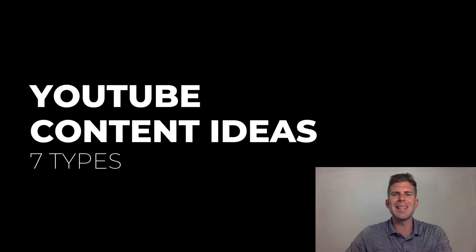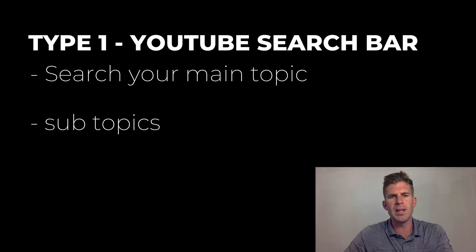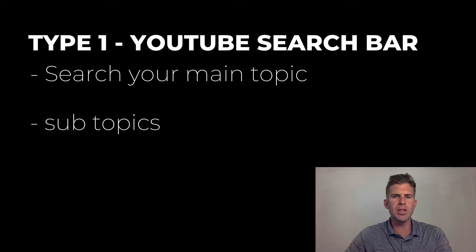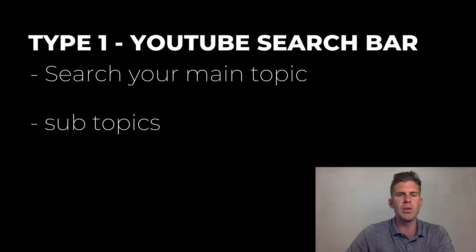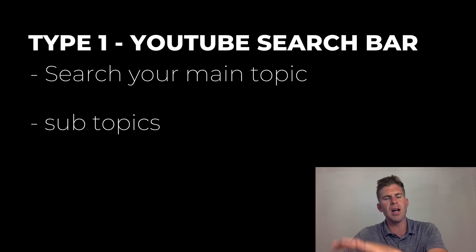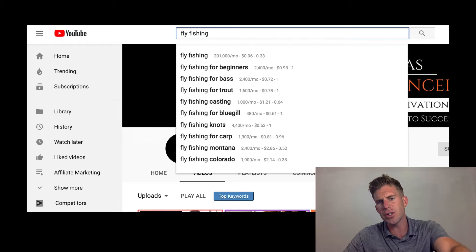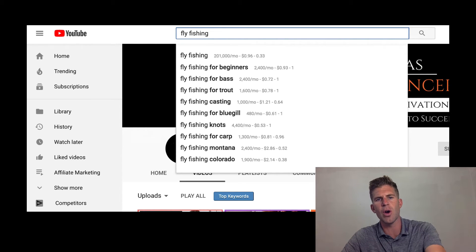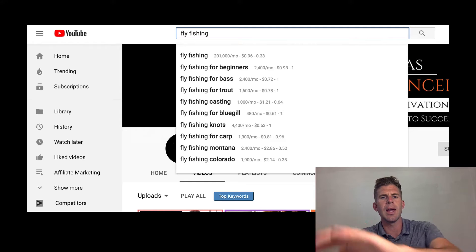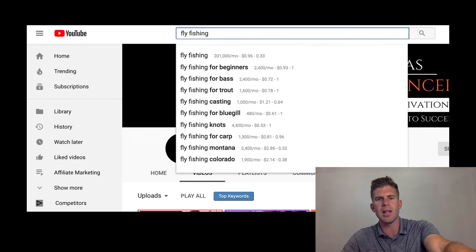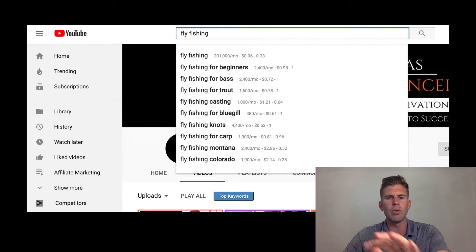Type number one is the YouTube search bar. Go into YouTube.com and start searching something in the YouTube bar. Search your main topic, then look up subtopics. So if you're doing fly fishing, this is what it looks like. I did this just seconds ago, and look at all those ideas — that's about 10 ideas of videos you can create right there.